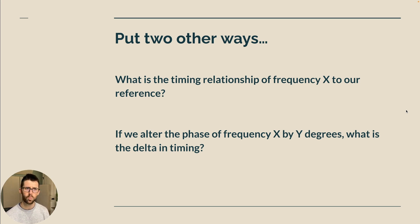So our second question is, if we alter the phase of processing X by Y degrees, what is the delta in timing? So we need those two variables, X and Y, which is one is frequency, and the other is the change in degrees. Some of you math smarty pants may be saying, well, can't we measure that in radians? You can, but most of the frequencies available to us in the audio world, we're going to be talking in degrees much more.